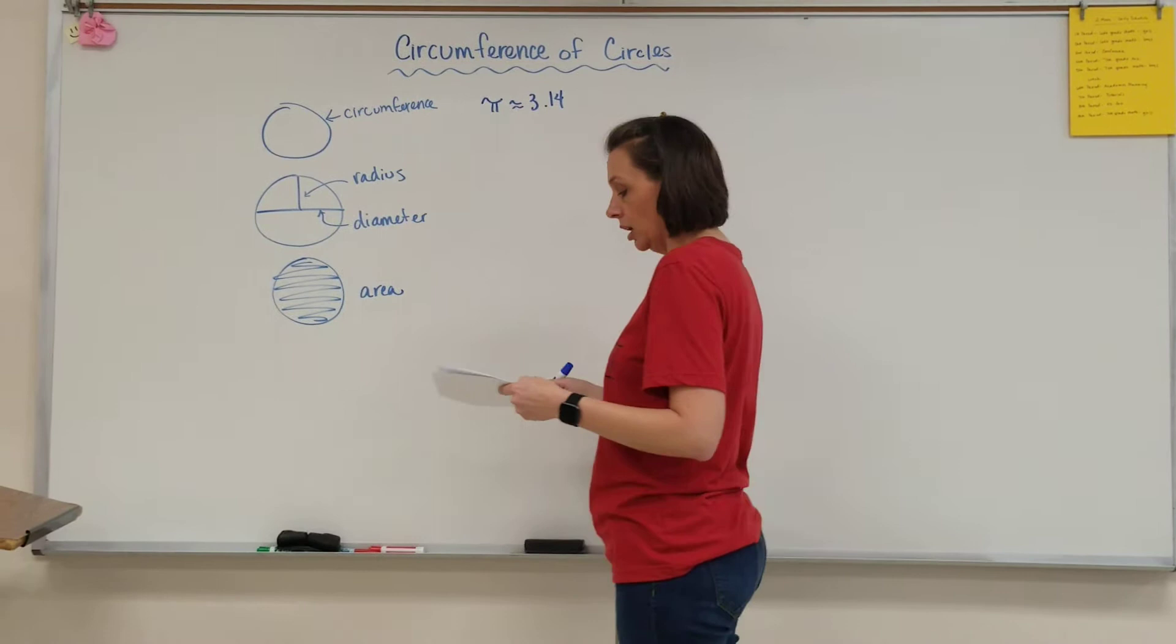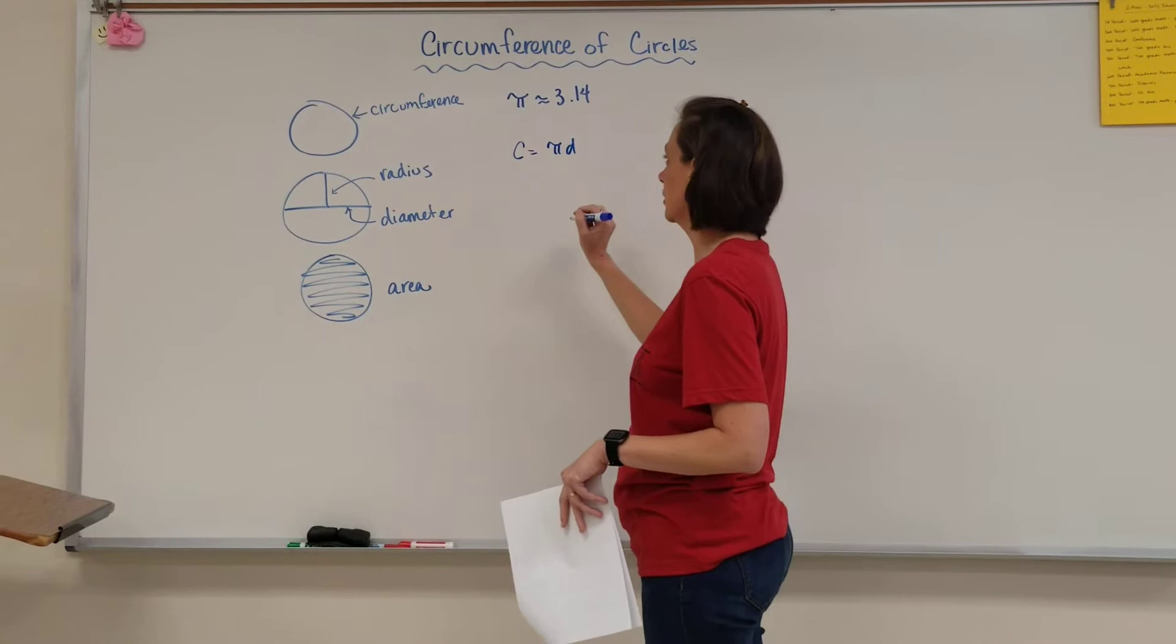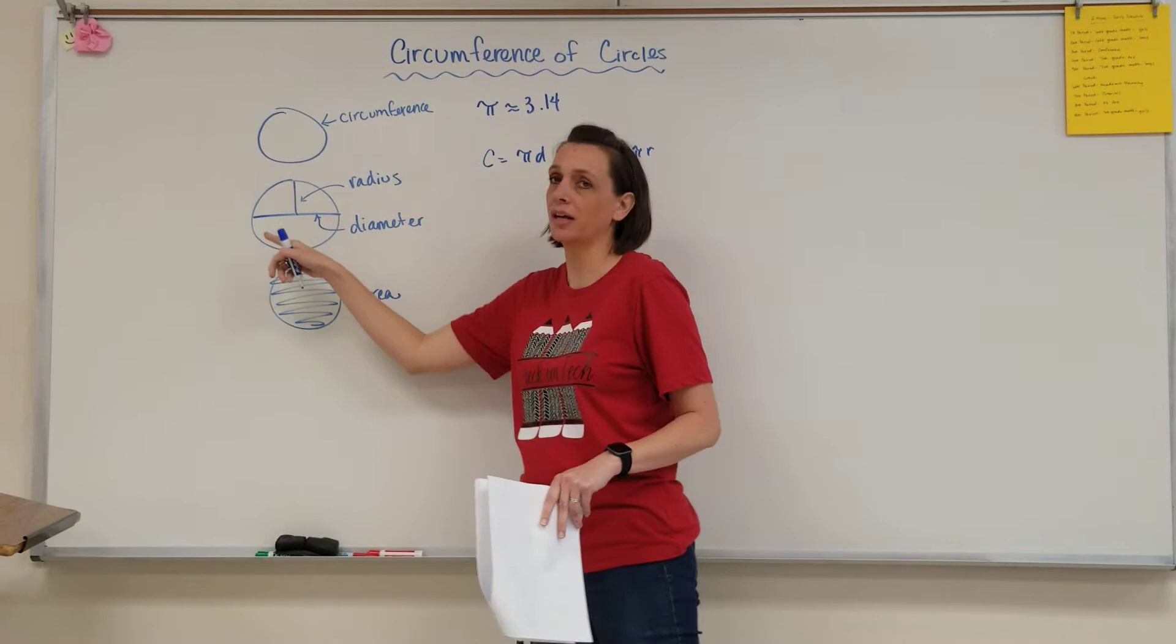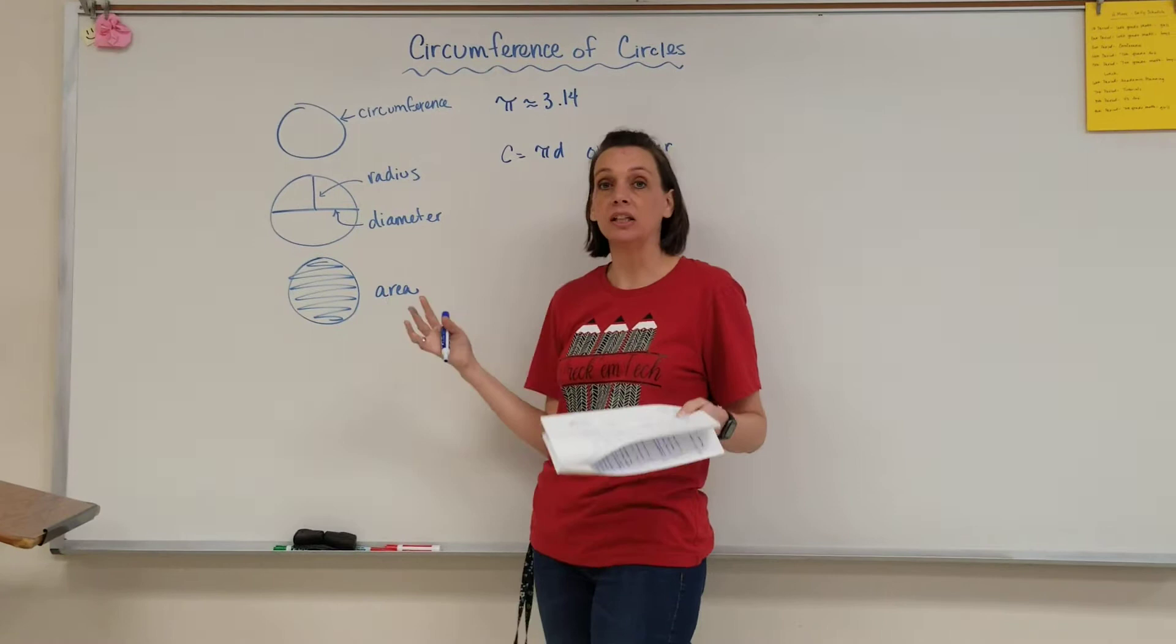Circumference of the circle is either going to be pi times diameter or we can say circumference is 2 pi r. So why do these both work? If I have one diameter all the way across it takes two radius to also be all the way across. They equal the same thing.